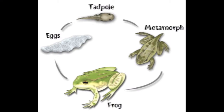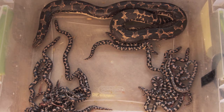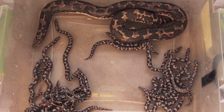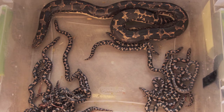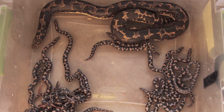Amphibians go through metamorphosis, which means when they give birth, they give birth to tadpoles which have gills and don't have lungs. Over time these tadpoles develop into what they will look like as adults — miniature frogs, for example. Reptiles, when they give birth, give birth to young that look pretty much exactly like the adults. Reptiles never have gills.